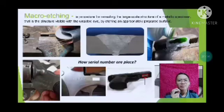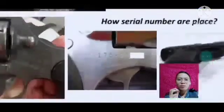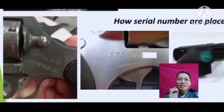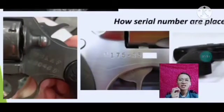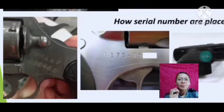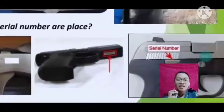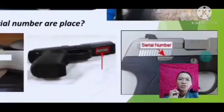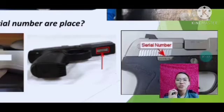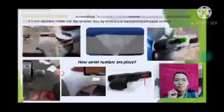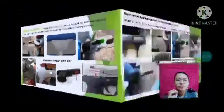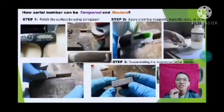Where can we find the serial number? For example, on a revolver, we can find it near the cylinder lock. On a pistol, we can find it on the slide — as shown in the right picture — and on the underside of the muzzle of the gun, as shown in the left picture.